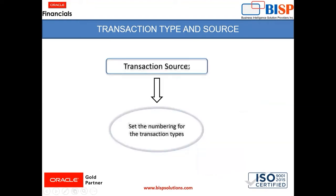Now moving further, there is one more concept known as transaction source. In transaction source, you can set the numbering for each transaction type — invoice, debit memo, credit memo, and chargeback — with the help of the transaction source in the application. We will now move to the application to see how transaction types are created and how transaction sources are assigned.